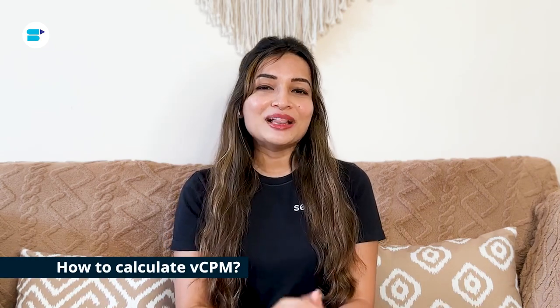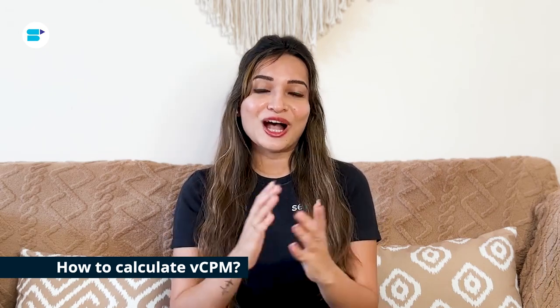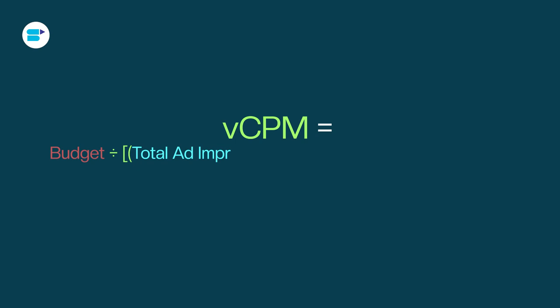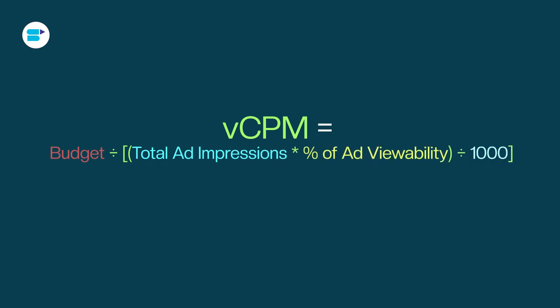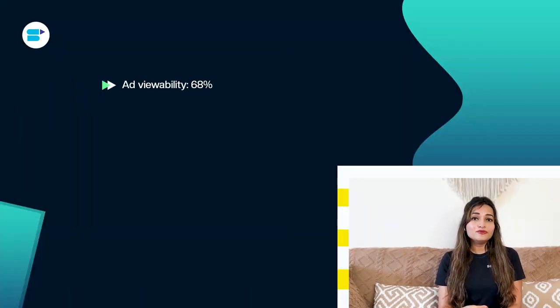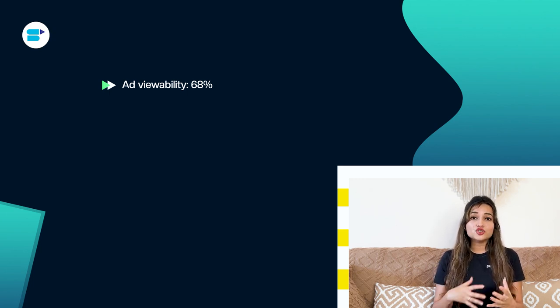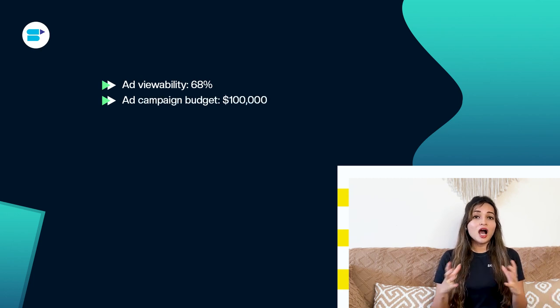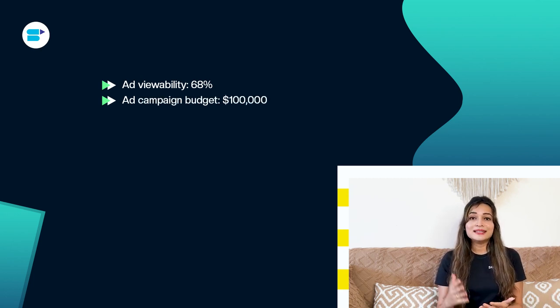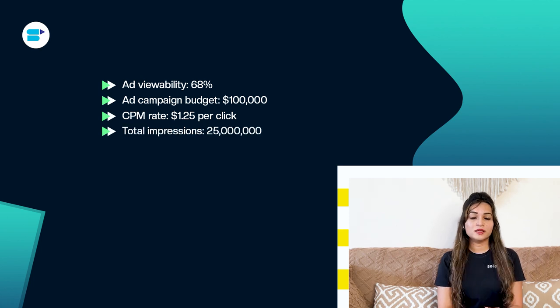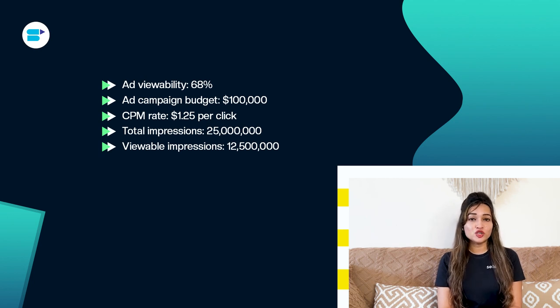How do you calculate VCPM? Calculating it is quite straightforward. The formula is: Budget divided by (Total Ad Impressions × Percentage of Ad Viewability), divided by 1,000. Let's say we have: ad viewability of 68%, a full ad campaign budget of $100,000, CPM rate of $1.25, total impressions of 250,000, viewable impressions of 125,000, and a maximum VCPM bid target of $5.00.